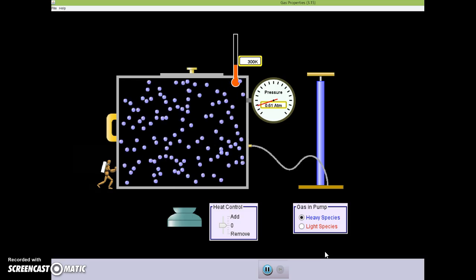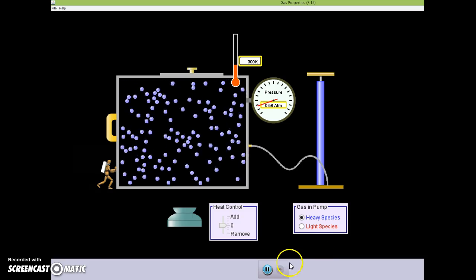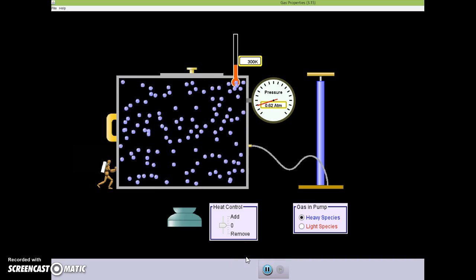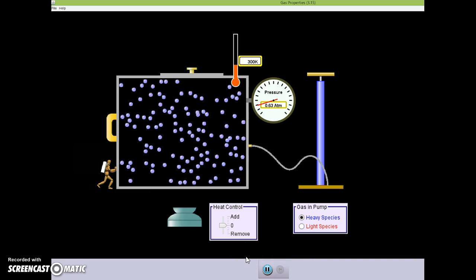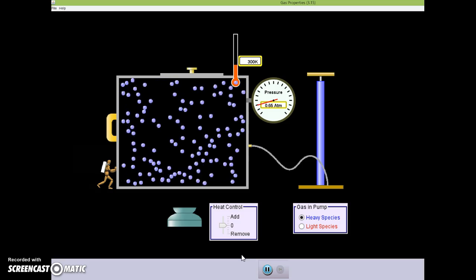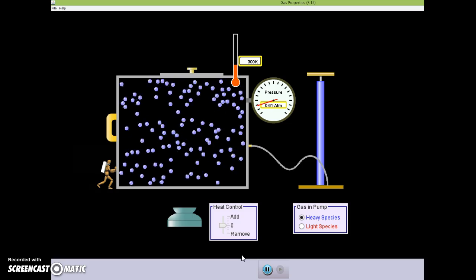We also see evidence of point two in this idea of elastic collisions. These particles, even if we watch them for an hour or two hours, would continue to move. When they hit each other, they transfer energy and so they exhibit that idea of elastic collisions.